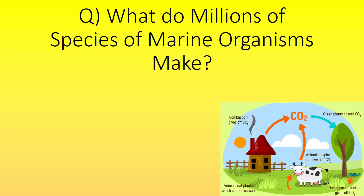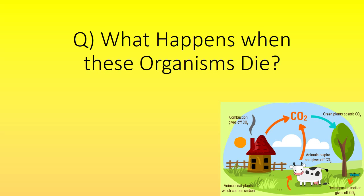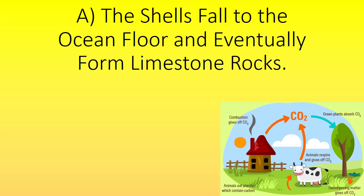What do millions of species of marine organisms make? Shells made of carbonates. What happens when these organisms die? The shells fall to the ocean floor and eventually form limestone rock.